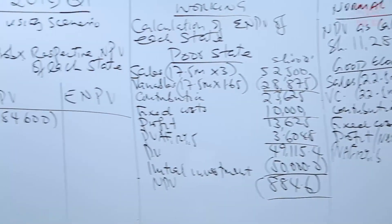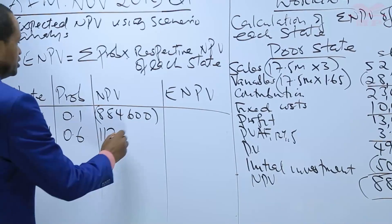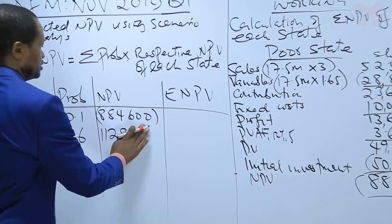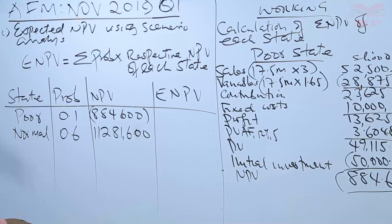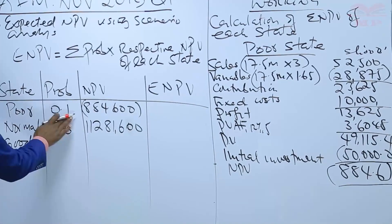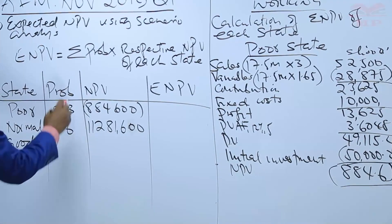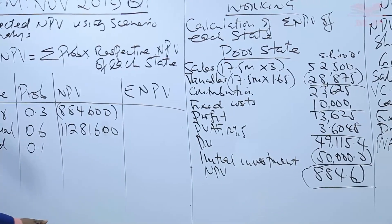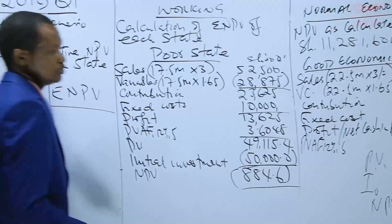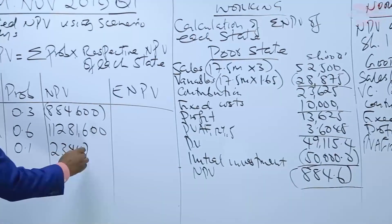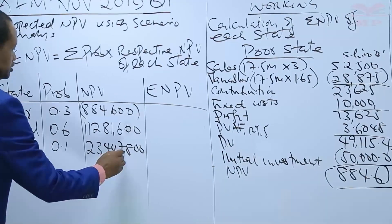The NPV for the normal state as calculated in part one is 11,281,600, positive. For the good economy, the probability is 0.3, and when the economy is good the probability of poor is 0.1. The NPV when the economy is good is 23,447,800.